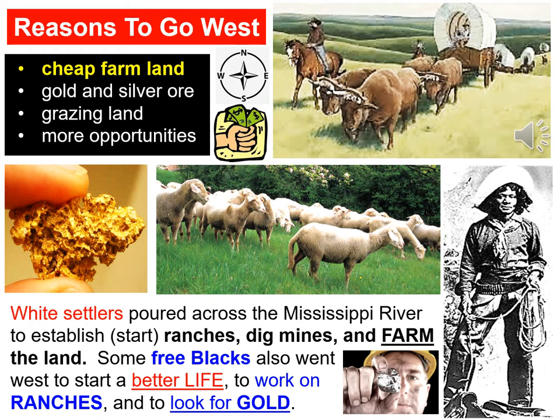In addition to wanting a better life, there were other reasons why people wanted to go west. Some of those reasons included cheap farmland, an opportunity to look for gold and silver and strike it rich, and more grazing land for animals. Some of those people were settlers, and some were freedmen — black people who wanted a better life and wanted to work on ranches and look for gold. A lot of black people moved over to the west. So these are some of the reasons why people decided to risk their lives moving west past the Rocky Mountains and Appalachian Mountains to settle the west.